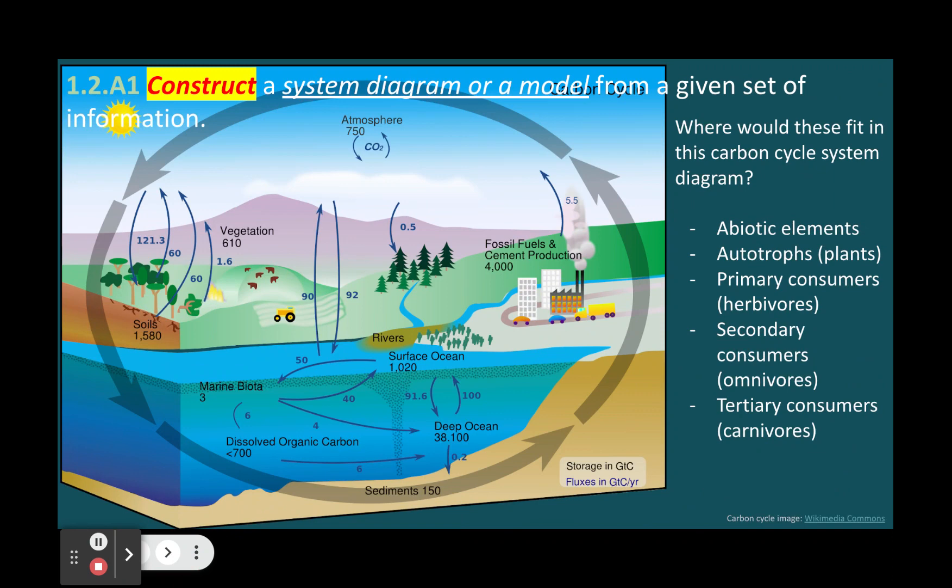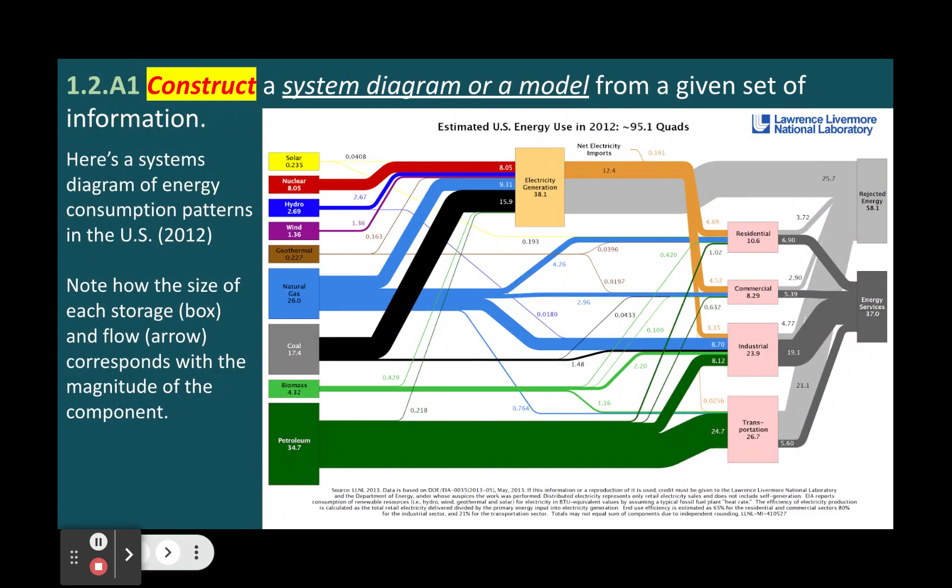These models are useful because they can help us understand the causes and effects of climate change and explore different scenarios and outcomes under different assumptions and policies. However, these models also have limitations because they're based on incomplete or uncertain data and they may not account for all the feedbacks and uncertainties that influence the climate system.